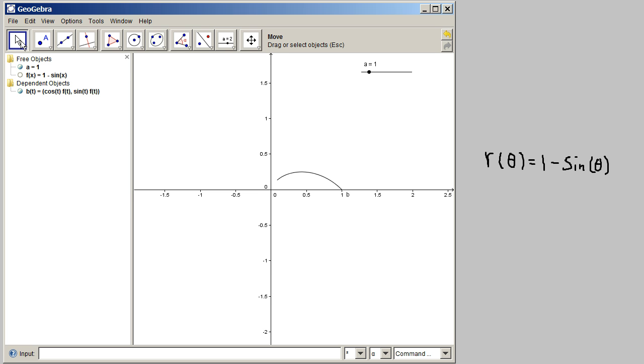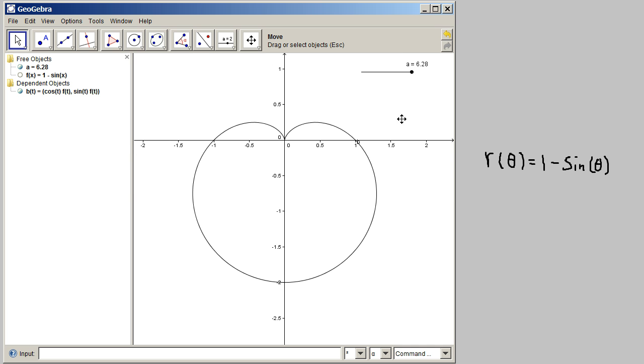And now what I can do is I can go to my arrow tool up here on the left and I can take this a and I can actually drag it and watch this function trace out in time as I vary this parameter a. You can see it trace out. And of course I can control drag and get a better view of it. And you can see how this thing traces out in time.